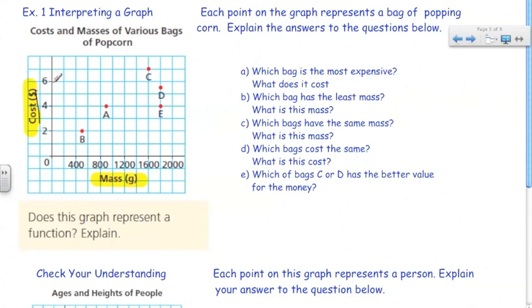Back to the question which bag is the most expensive. We have cost here. Let's see. Bag C is located here and this is clearly the most expensive and we're going in increments of 2. So, we can add in 1, 2, 3, 4, 5, 6, 7. So, the most expensive bag costs $7.